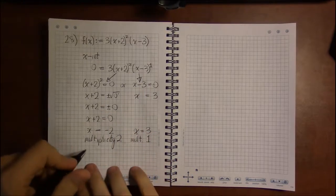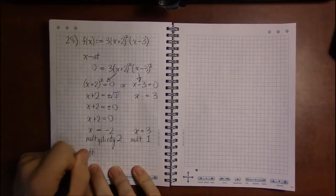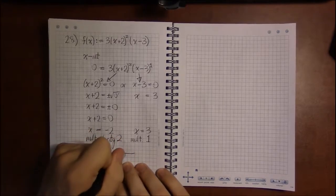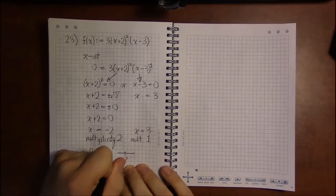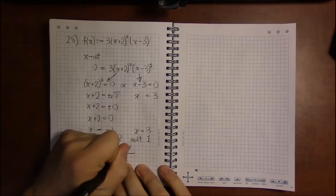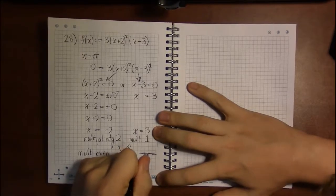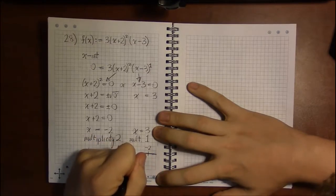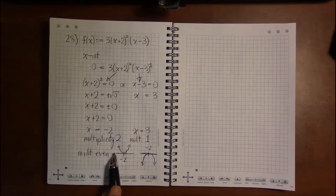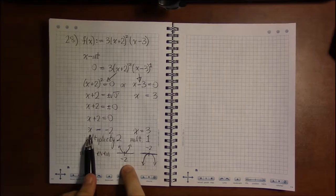The multiplicity, or the exponent, on the x-intercept affects how the x-intercept looks graphically. If the multiplicity is even, then like here for x = -2, it's either going to be the case that the graph bounces off x = -2 from above or from below. So as the book calls it, the book calls this touching but not crossing the x-axis. And even multiplicity means the graph will touch x = -2 but will not cross the x-axis at x = -2.